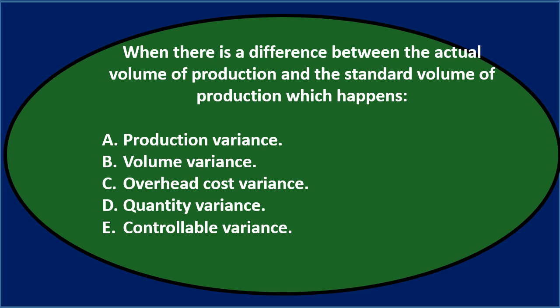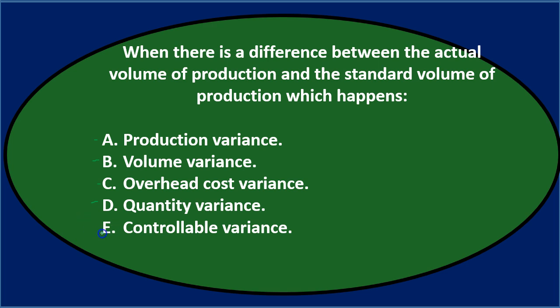Let's go through this again using the process of elimination. When there's a difference between the actual volume of production and the standard volume of production, which happens? A. A production variance — that sounds possibly related. B. A volume variance — the word 'actual volume' makes that sound reasonable. C. Overhead cost variance — a cost variance sounds kind of reasonable. D. Quantity variance — volume is basically the difference in quantity, so that sounds reasonable too. E. Controllable variance — I'm going to cross that one out.